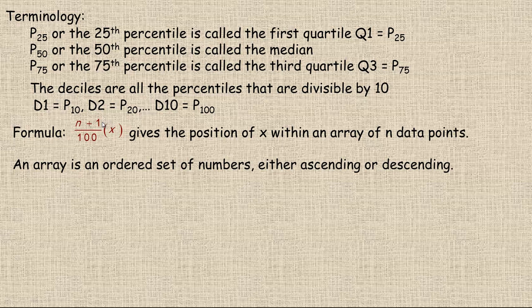This formula gives the position of whatever X is. X represents the percentile number within an array of N data points. N represents how many data points you have here. Percentile goes, percent of course normally goes up to 100, so that's why the denominator here is 100. Now, what an array is, it's an ordered set of numbers, either ascending or descending. We normally go in ascending order.